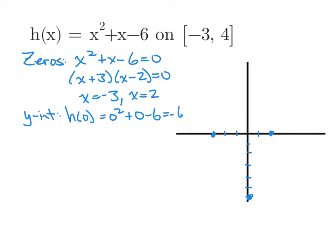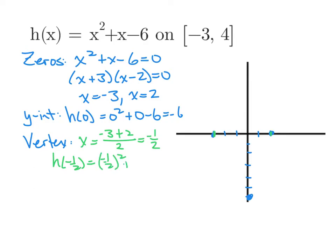We also need to find the vertex, which happens halfway between the two zeros, negative 3 and 2. The x-coordinate is found by adding the zeros and dividing by 2: that gives negative one half. Then to find the y-coordinate, plug negative one half in: negative one half squared plus negative one half minus 6 simplifies to negative 6 and a quarter. So the vertex is at (negative one half, negative 6 and a quarter).